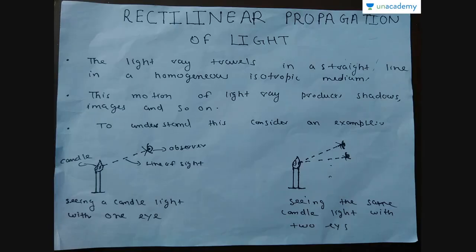Today we are going to discuss about rectilinear propagation of light, that is straight line motion of light. Light travels in a straight line in a homogeneous isotropic medium. By homogeneous isotropic I mean all the optical properties of the medium are same or constant throughout the medium.